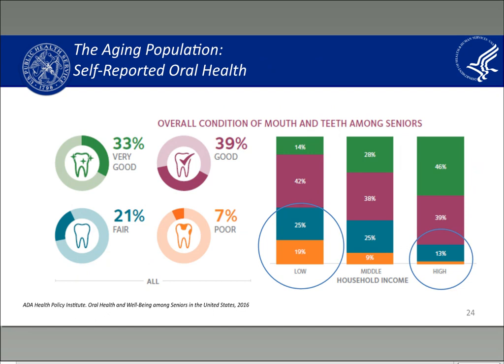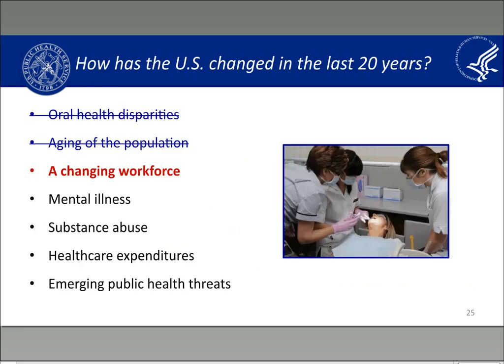When the ADA Health Policy Institute asked older Americans to self-report their oral health, 44% of those in the low household income bracket reported their oral health as either fair or poor, compared to less than 15% of those in high household incomes.